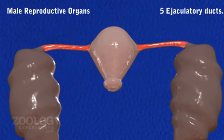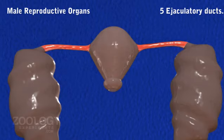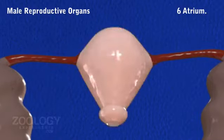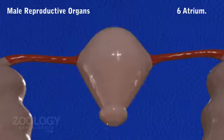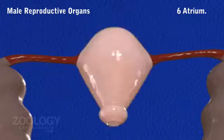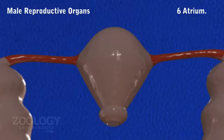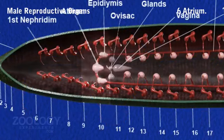Ejaculatory ducts: From the anterior and inner end of each epididymus arises a short and narrow ejaculatory duct. The ejaculatory ducts of both sides join a median piriform sac called atrium, which extends into the 9th and 10th segments and opens outside by the male genital pore.